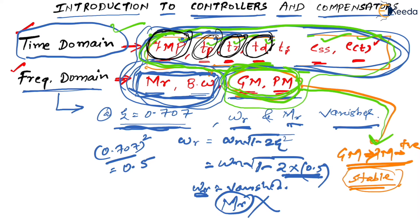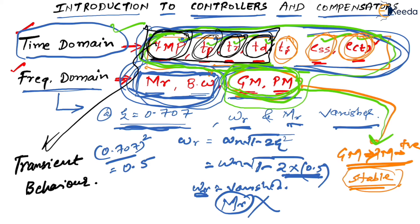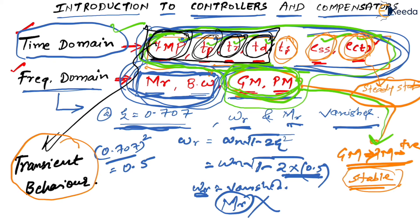If you observe all these parameters — GM, PM, MP, Tp, Tr, Td — all the parameters shown in black belong to transient behavior. And if you see Ts, ESS, and E of T — settling time, steady state error, and dynamic error — all three of these belong to steady state behavior. In a total response, it is the sum of transient behavior and steady state behavior.